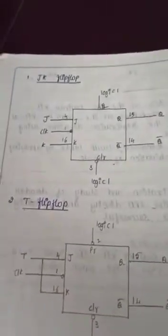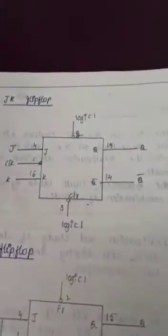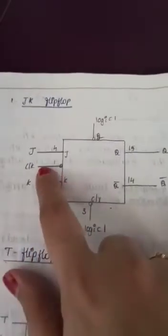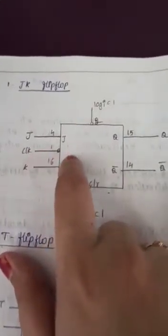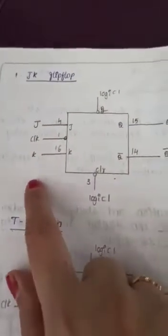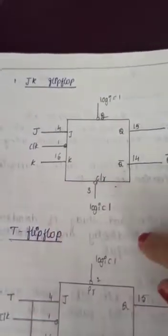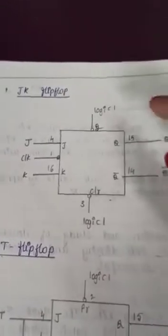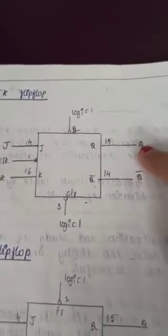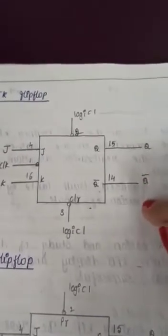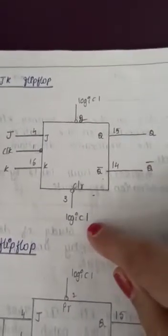Now let us check the circuit diagram of the JK flip-flop. This is the JK flip-flop IC. Pin number 4 is connected to the J input, and pin number 16 is connected to the K input. Both the preset and clear are at logic high. The output Q is obtained from pin number 15, and Q bar is obtained from pin number 14.